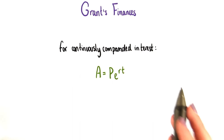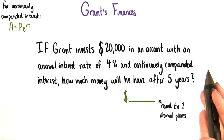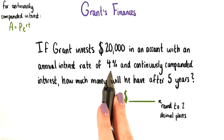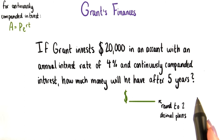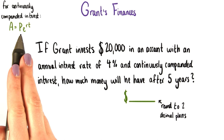What if we kept Grant's situation exactly the same as before? A principal of $20,000 and an annual interest rate of 4%, but this time we let the interest compound continuously. How much money will he have after 5 years? Don't forget to use our new equation, and please round to 2 decimal places. Let's do this.